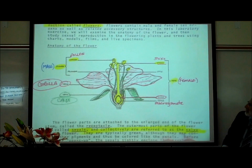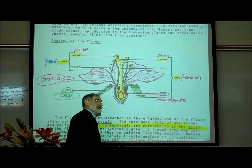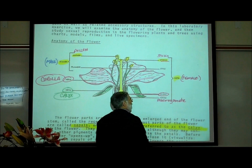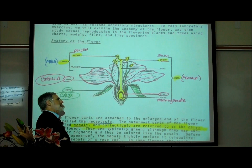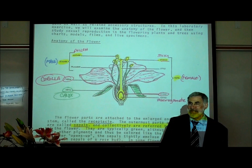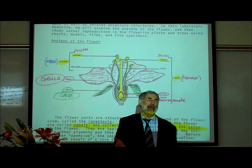Let me go through that more carefully. In the very center of the flower there is typically one pistil — though some flowers have multiple. That's the female part of the flower. The challenge in biology is remembering all these words. You need to know that pistil is the female part. Does anybody have a suggestion for how to remember that?